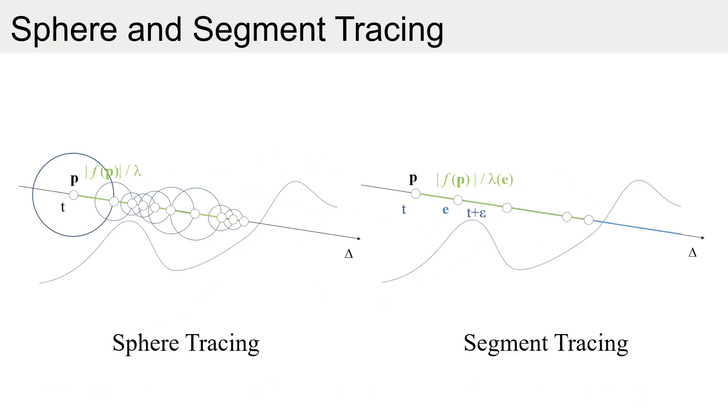In particular, when the ray gets close to the surface, our local Lipschitz bound is small and allows for longer steps. In contrast, standard sphere tracing slows down when approaching the surface.